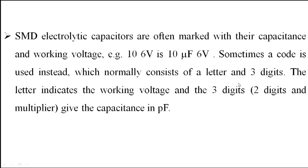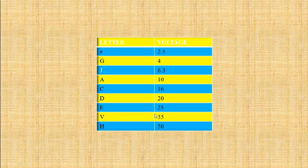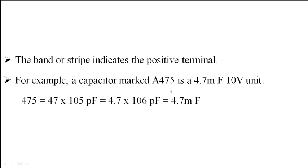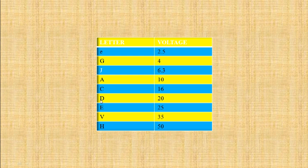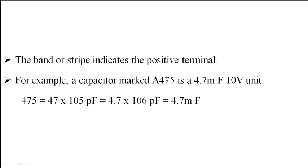When a code is used, it consists of a letter and 3 digits. The letter indicates the working voltage, and the 3 digits represent 2 significant digits plus a multiplier to get the capacitance in picofarads. For example, A4CM5: 'A' means 10, so the working voltage is 10V. '4' and '7' are the two digits, and '5' is the multiplier, giving 47 × 10^5 picofarads, which equals 4.7 microfarads capacitance.